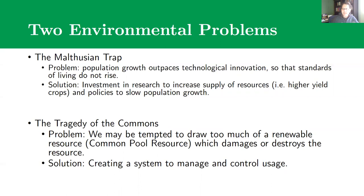What ended up happening is a new technology would improve food production, and for a short period of time things would get better. But then people would stop starving in the winter, babies would stop dying from malnutrition, people would live longer, and within a generation the population had grown to a point where all of that extra food production was being consumed and the population was again sitting on the edge of starvation. Thomas noticed this pattern over and over throughout human history.